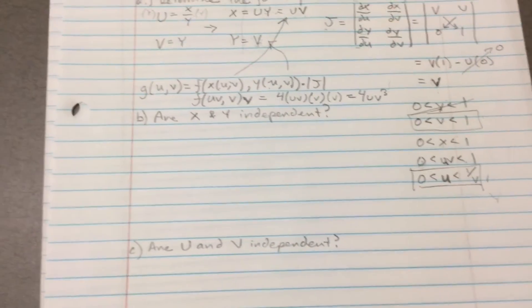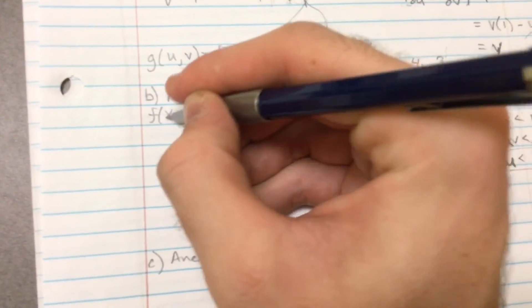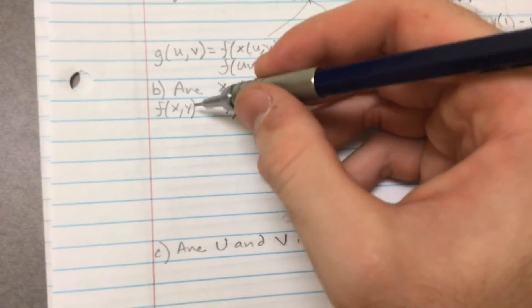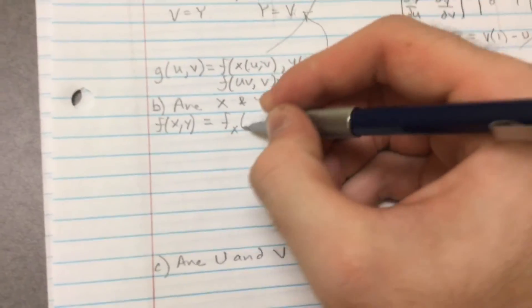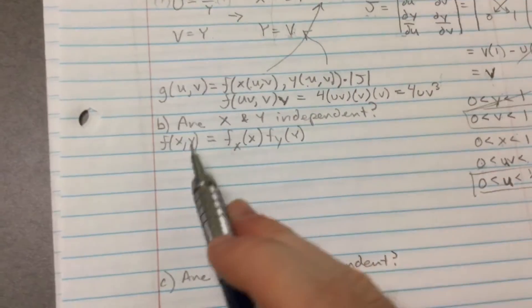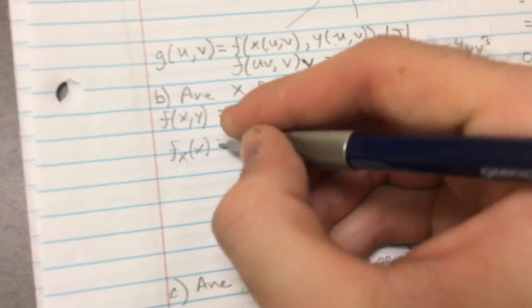Now we want to determine whether or not X and Y are independent. So how do we determine independency or independence? Well, this is the blueprint. If the function, if the joint PDF is equal to the marginals, if this is true, then it's independent. So now we have to calculate the marginals. And we're not going to be looking at the one that we just made because it's in terms of X and Y. So we got to calculate the marginals here.